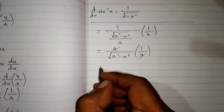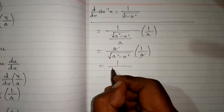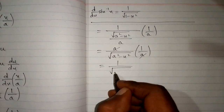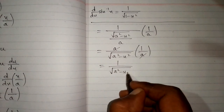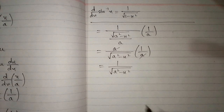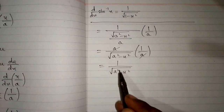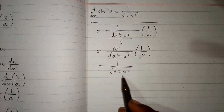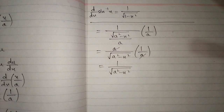And after cancellation we have 1 upon square root of a square minus x square. So the derivative of the given function is 1 upon square root of a square minus x square.